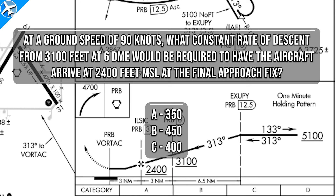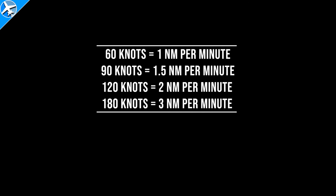Simply dividing the altitude loss by the amount of time between fixes — 700 feet divided by 2 minutes — the airplane would have to descend at 350 feet per minute.